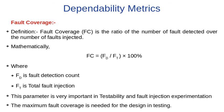Another parameter is fault coverage. By definition, fault coverage is the ratio of the number of faults detected over the number of faults injected. Mathematically, it is described as FC = FD / FT × 100, where FD is the fault detection count and FT is the total injection count. This parameter is very important in testability and fault injection experimentation, and maximum fault coverage is needed for design and testing.